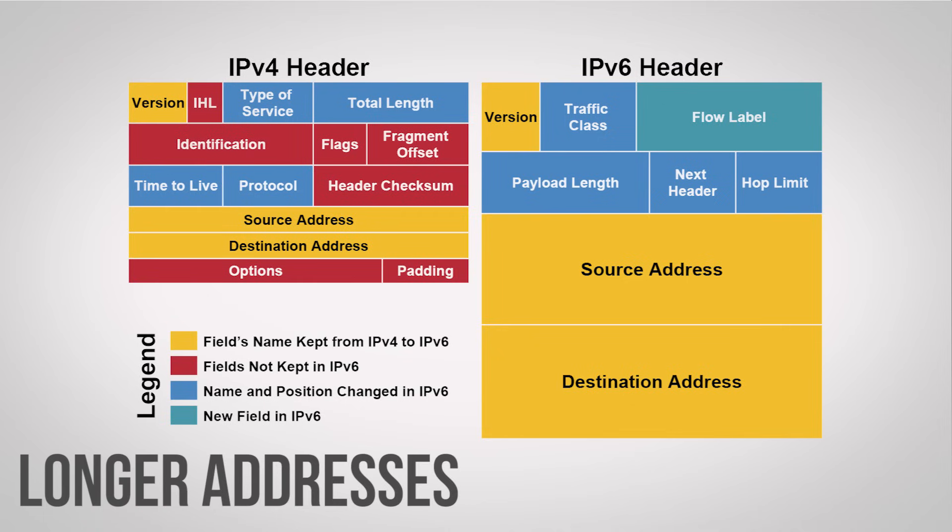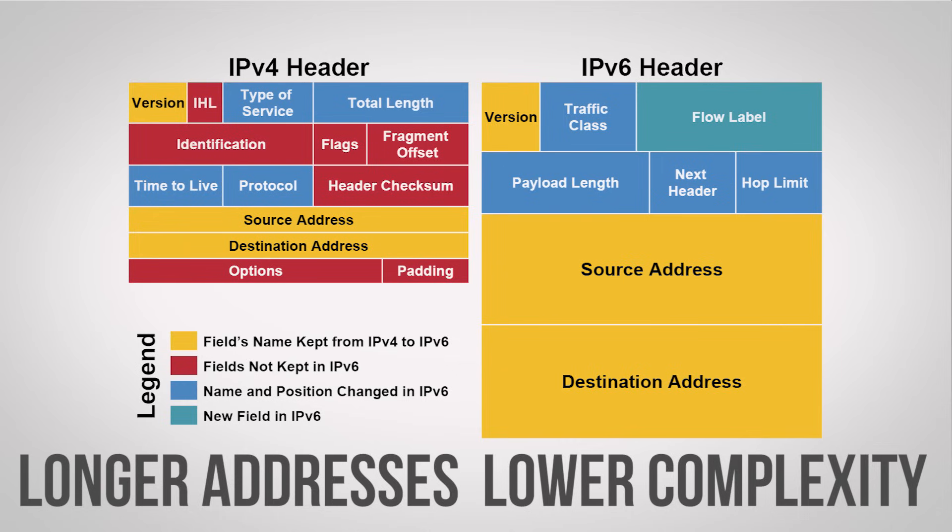Which leads into the next point: simplicity. Having each device be able to address every other device on the network will improve performance directly. With IPv6, devices can auto-configure themselves rather than relying on DHCP to get an address. The header data that must be included with every packet, while actually larger to accommodate the longer addresses, has a ton of extraneous stuff cut out to reduce overhead, while allowing more customizability for the future.